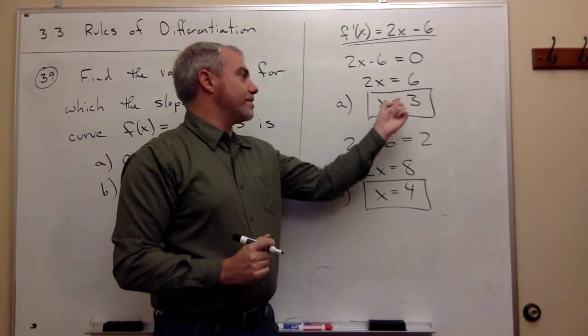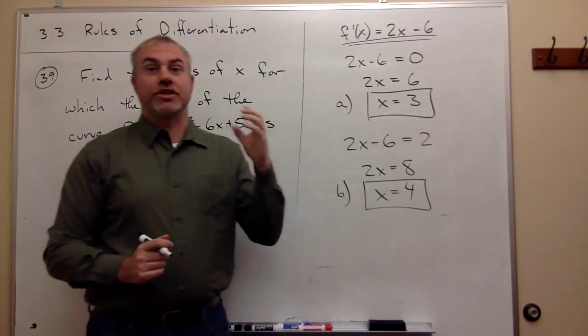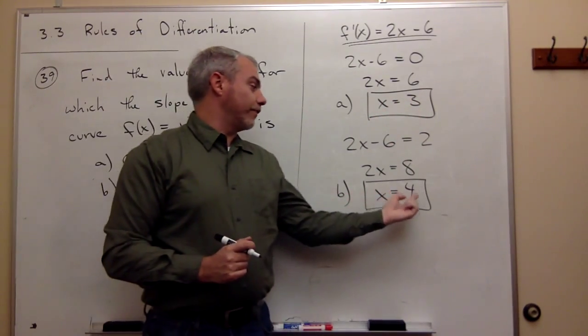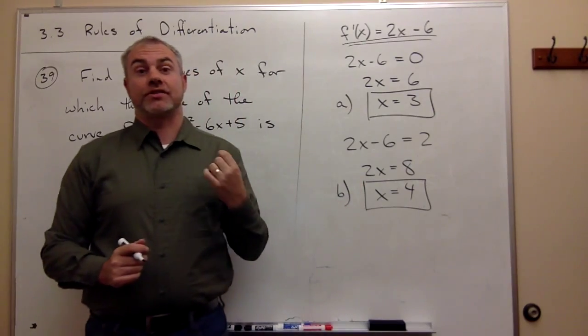In other words, when x is equal to 3, the slope of the function is 0. When x is equal to 4, the slope of the function is 2.